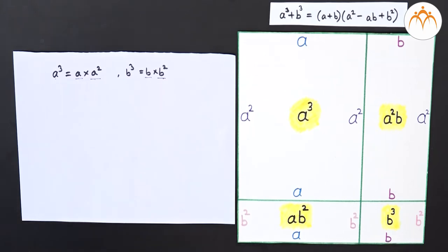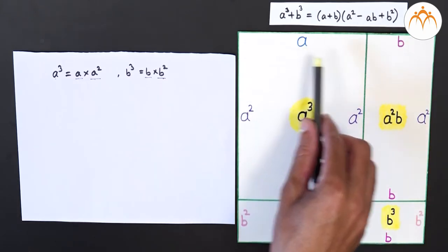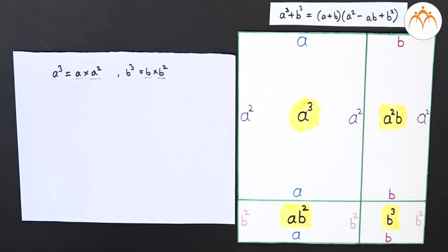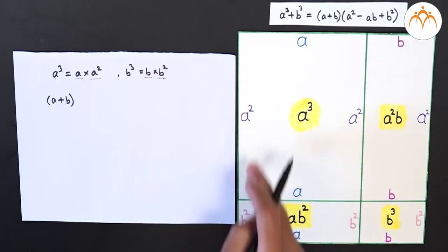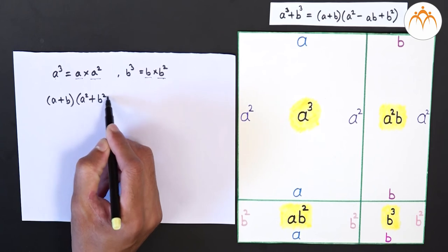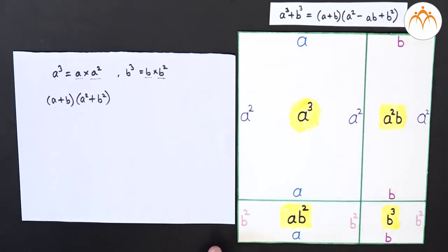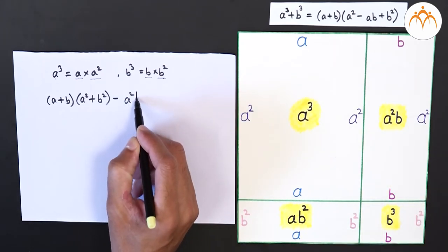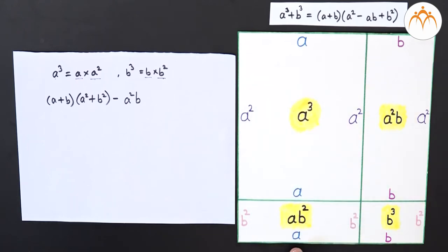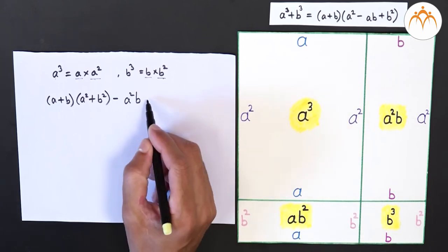So if we find the area of this big rectangle and subtract these two inner areas from it, we will obtain a cube plus b cube. The sides of the big rectangle are a plus b and a squared plus b squared, so its area is a plus b into a squared plus b squared. Now the sides of the extra rectangle are b and a squared, so its area is a squared b, that is a b squared.